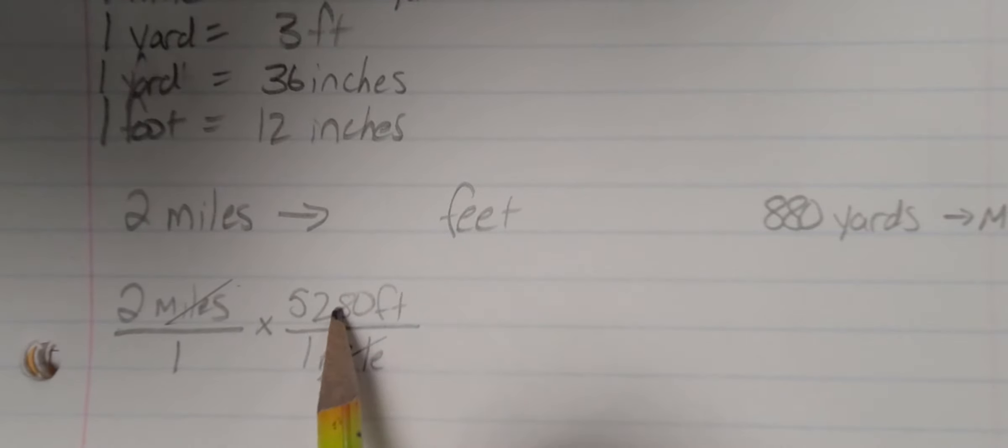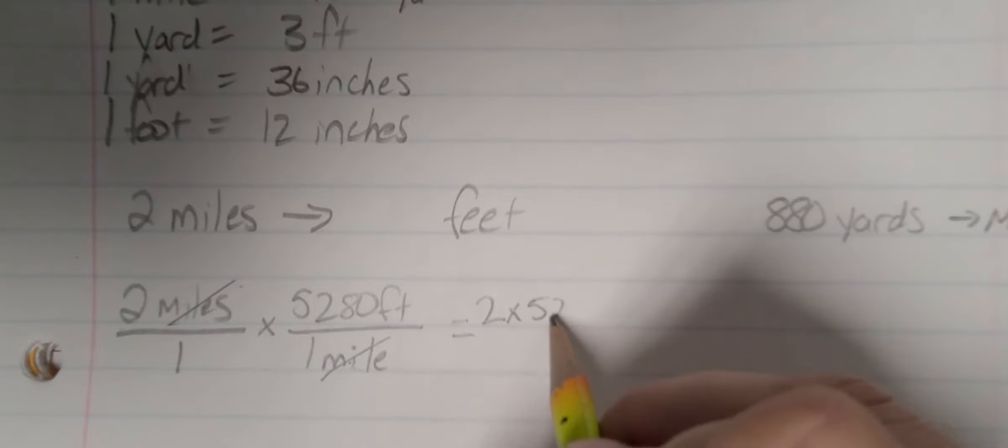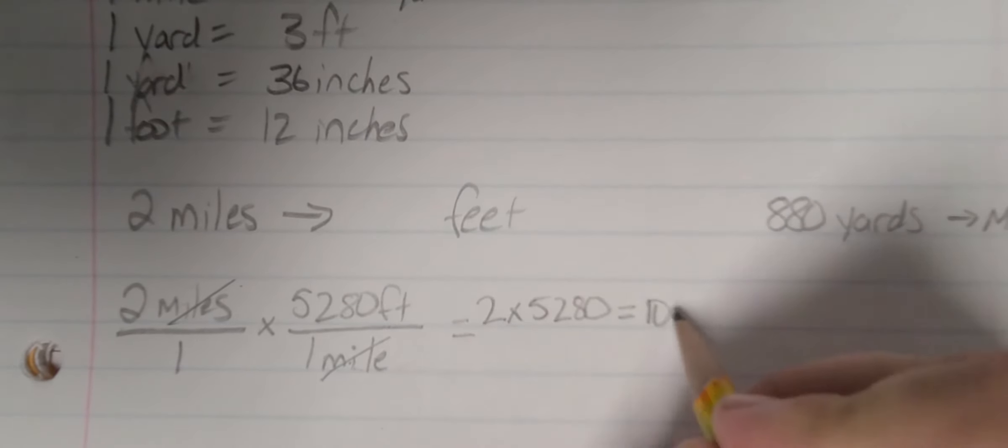Then, since 1 mile is 5,280 feet, I would now multiply 2 times 5,280. This gets me 2 times 5,280, which would then get me 10,560 feet.